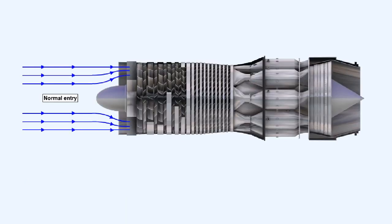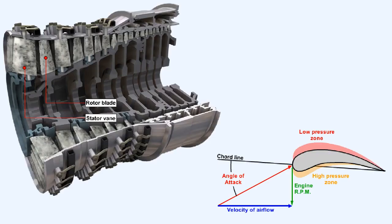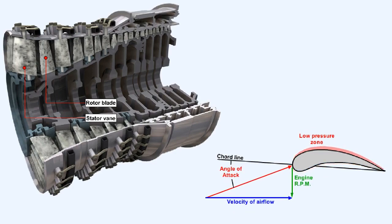Turbulent or disrupted airflow to the engine intake will reduce the axial velocity of the airflow through the whole of the compressor. Contaminated or damaged compressor components — rotor blades or stator vanes — will reduce the efficiency of the compressor as a whole. This will cause an increase in the axial velocity of the airflow through the compressor because of the decreased compression ratio.